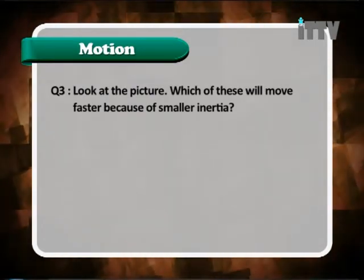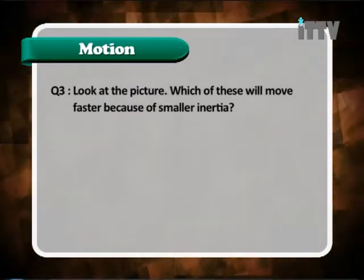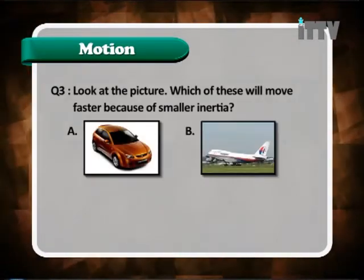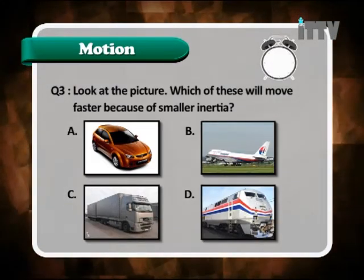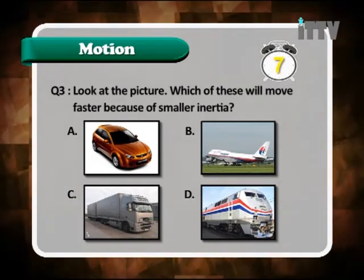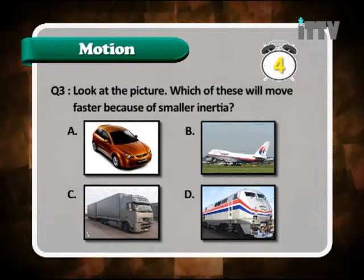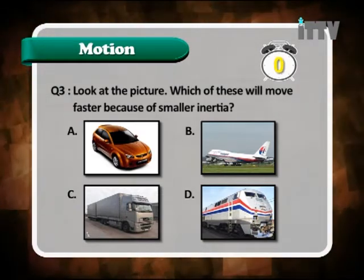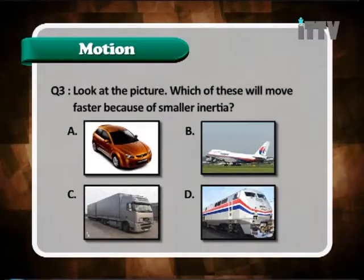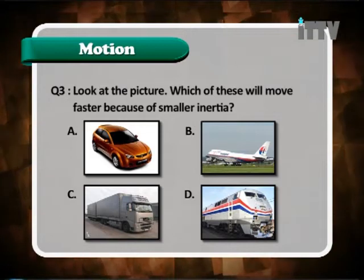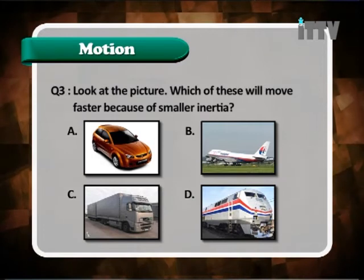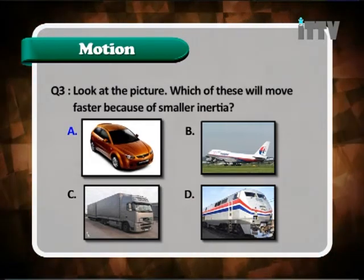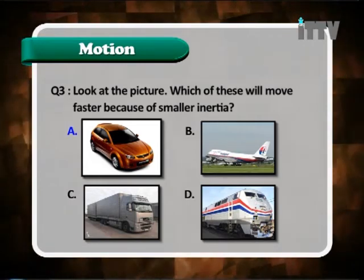Question 3: Look at the picture — which of these will move faster because of smaller inertia? A. a car, B. a plane, C. a trailer, D. a train. Smaller inertia is related to smaller mass. Out of these four options, the smaller mass is the car, therefore the answer is A.